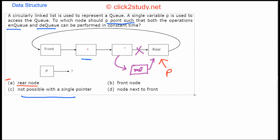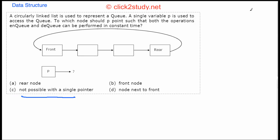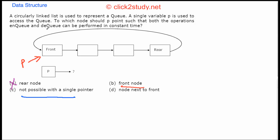Now consider P pointing to the front node. Think about the dequeue operation — you need to delete the front node. To do that, the last node's pointer must be updated to skip the front and point to the next node. But to find the last node, you again have to traverse the entire list, making it linear time. So front is also not possible.